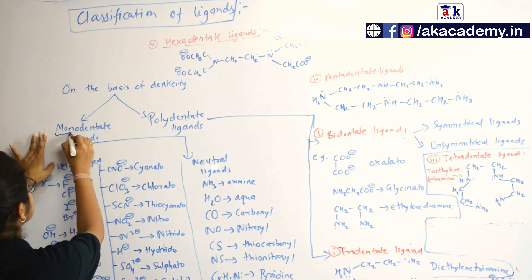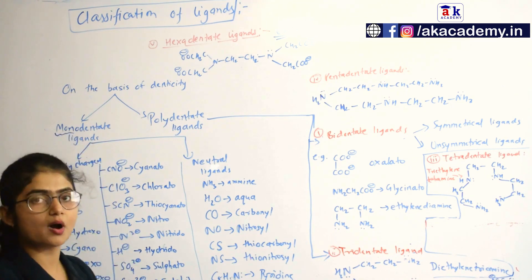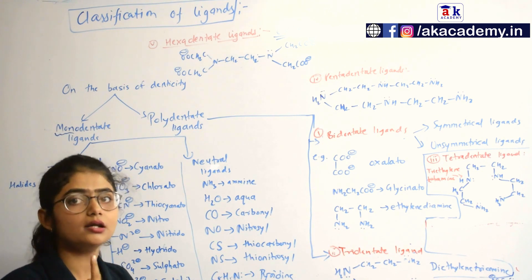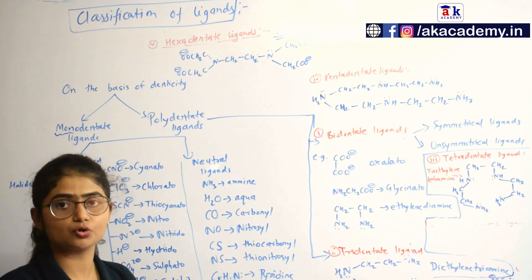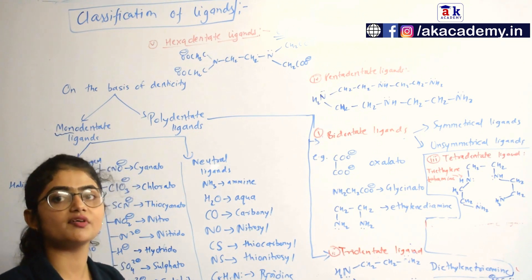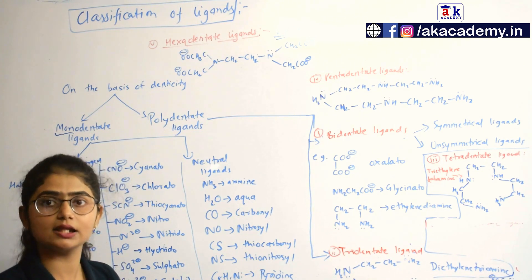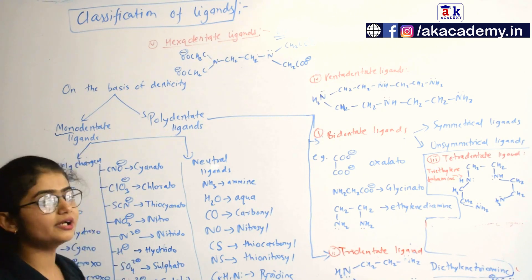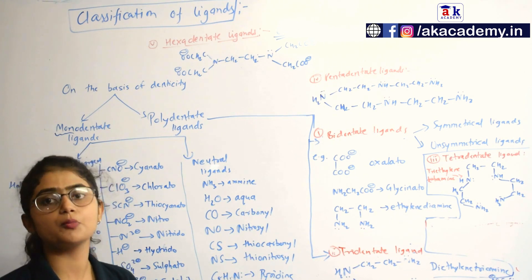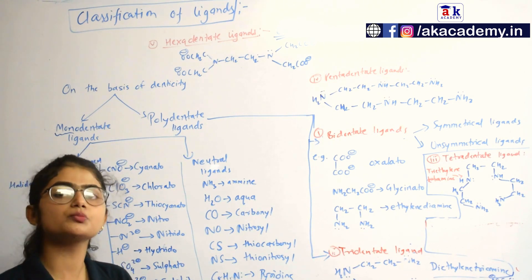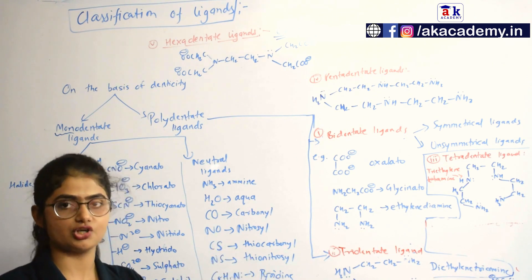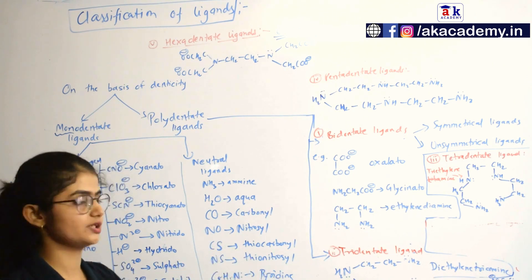Monodentate ligand — as the word suggests, mono means one. A ligand which has only one point of attachment, only one site of attachment to the metal, is a monodentate ligand. The monodentate ligand could be negatively charged, positively charged, or neutral, but the most important ones are the negatively charged and neutral ligands.